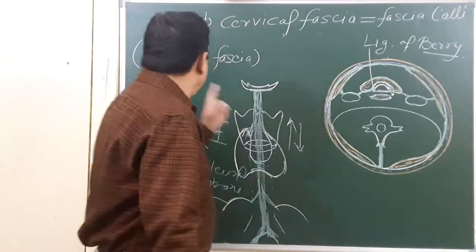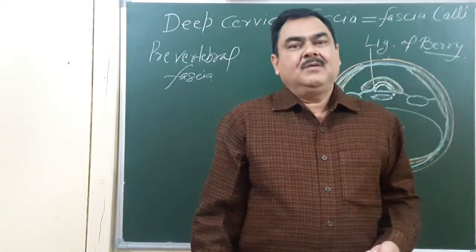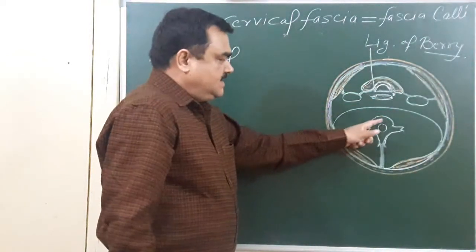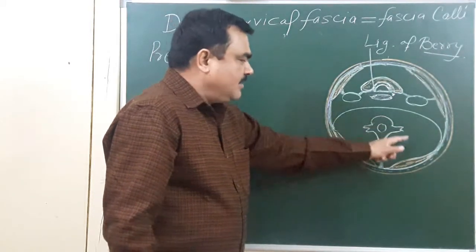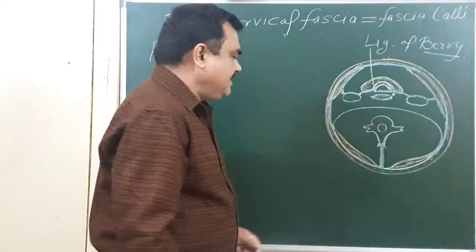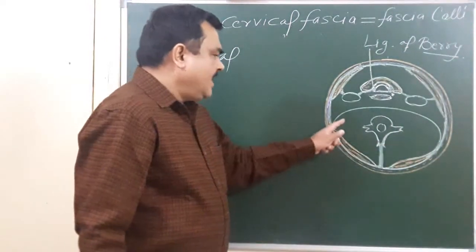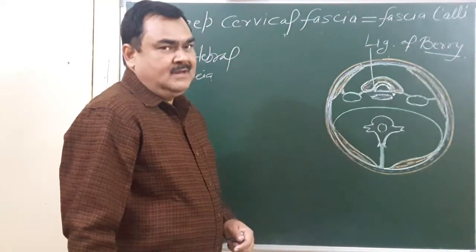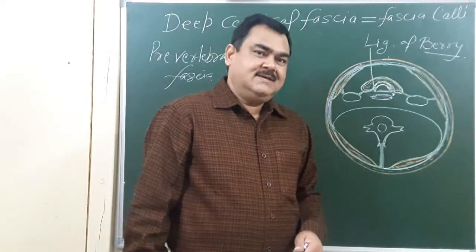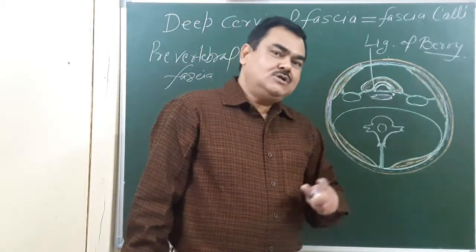So this is all about the pre-tracheal fascia. Now we discuss about the pre-vertebral fascia and the modifications of the deep cervical fascia. Here you can see this is the vertebra and here lie the muscles around the vertebra. This fascia covers the vertebra and muscles around it, so this fascia is the pre-vertebral fascia. It merges on the left side with the investing layer of the deep cervical fascia, and inferiorly it gives an extension forming the axillary sheath around the brachial plexus and subclavian artery. The subclavian vein lies outside this sheath.